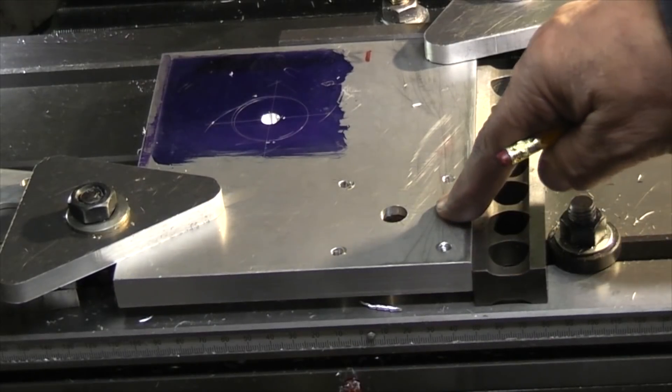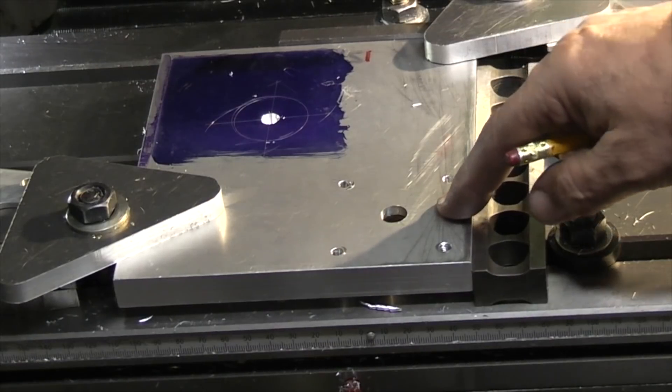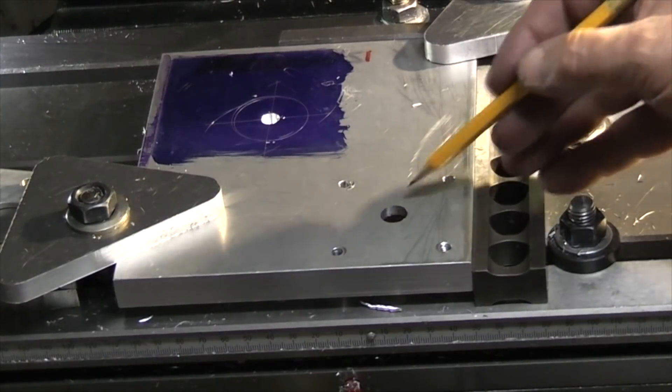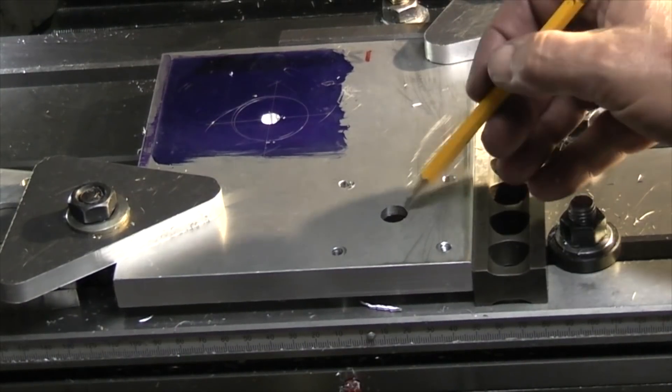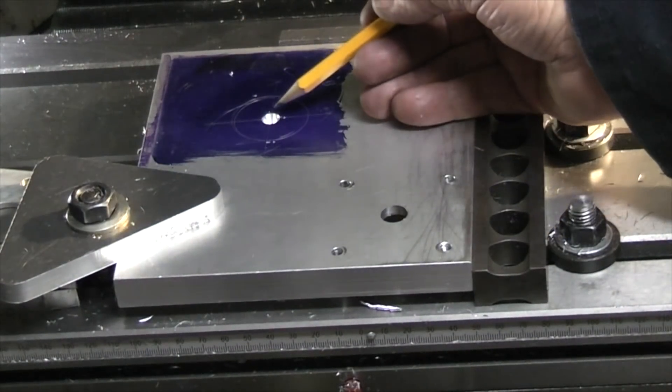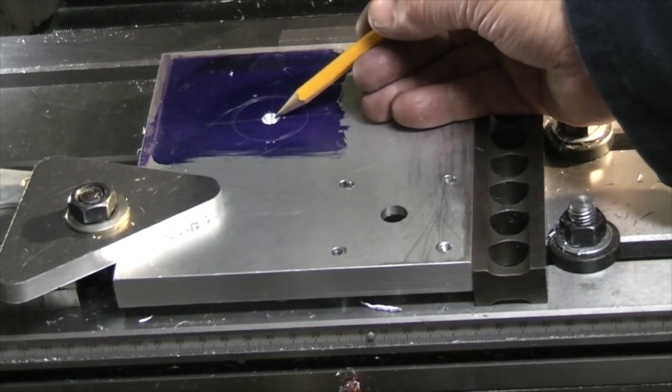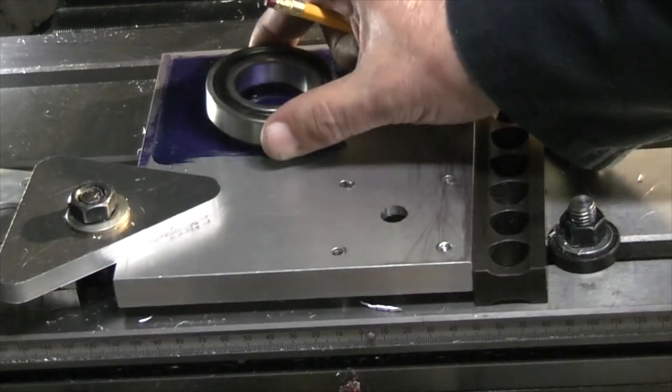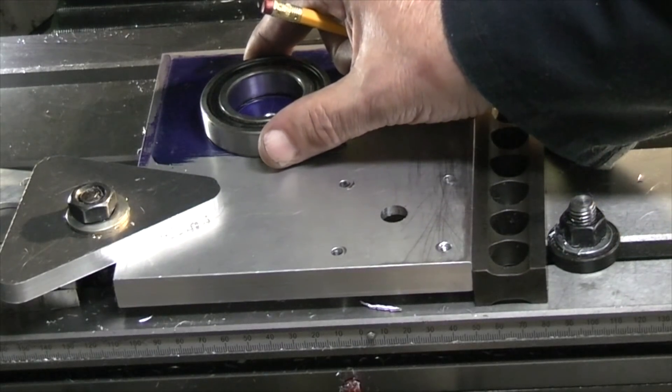This is one of the two plates that are inside the box and this holds the stepper motor. I've just finished drilling the holes for the stepper motor and this one here is the center point where I want the bearing race to locate for the spindle.